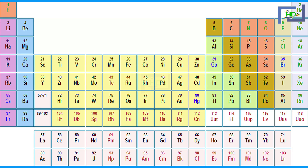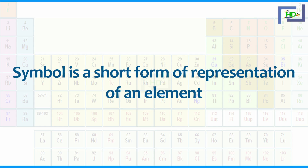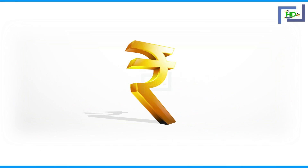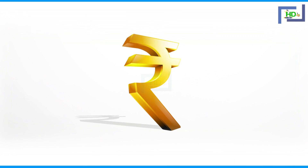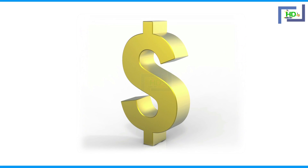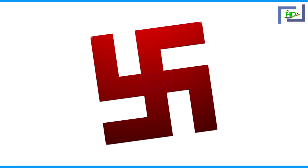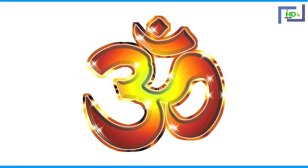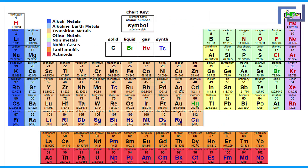There are 117 known elements. To identify all these elements, we require some representation — symbols of elements. This is nothing but a short form of representation of an element. In daily life, you come across so many symbols. For example, the rupee symbol for Indian rupee, the US dollar symbol, the symbol of swastika, the symbol OM. Similarly, all the elements are represented using symbols.